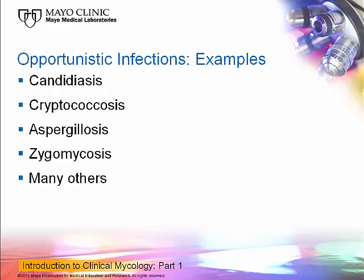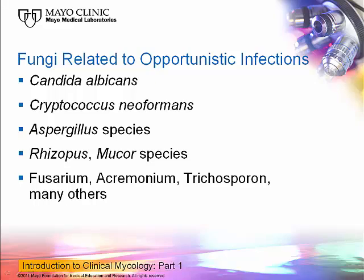Opportunistic infections include candidiasis, cryptococcosis, aspergillosis, zygomycosis, and many more. The list goes on because we see organisms that we never thought would cause disease now causing substantial infections and sometimes leading to death. Related organisms include Candida albicans, Cryptococcus neoformans, Aspergillus, Rhizopus, Mucor, and a number of other Mucorales, Fusarium, Acremonium, Trichosporon, and many others.